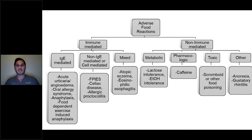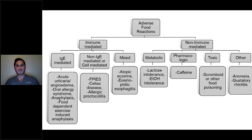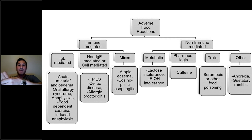Mixed conditions include atopic eczema worsened by food, and eosinophilic esophagitis or EOE, which is becoming more common among patients with atopic family history. EOE is food-driven, mostly affecting the esophagus, presenting as abdominal pain, heartburn, and eventually food impaction as the esophagus narrows from chronic inflammation. It is managed by allergists and gastroenterologists. Non-immune-mediated reactions include metabolic issues like lactose intolerance, pharmacologic reactions like caffeine-related palpitations, and toxic reactions like scromboid from spoiled finned fish containing histamine-like chemicals.